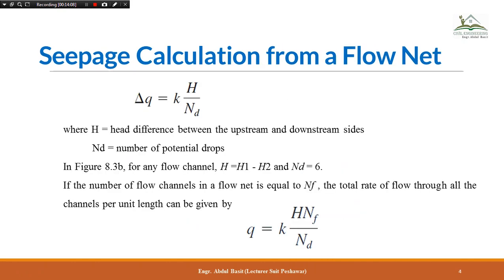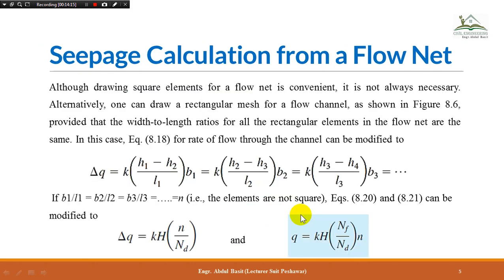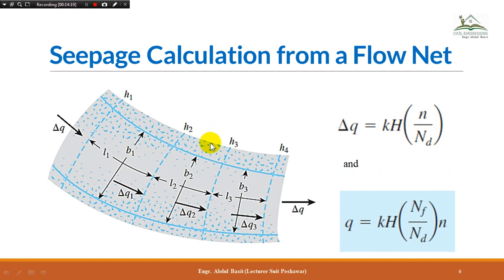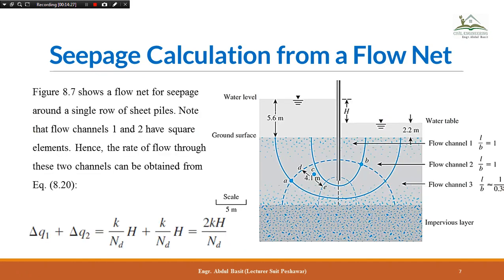This is the final equation for seepage calculation from a flow net where flow elements are rectangular. Now consider a situation where the first flow channel has all square elements, the second channel also has all square elements, but the third channel has non-square (rectangular) elements. In this case the equation cannot simply be multiplied uniformly by n — each channel must be treated with its particular b/l ratio.